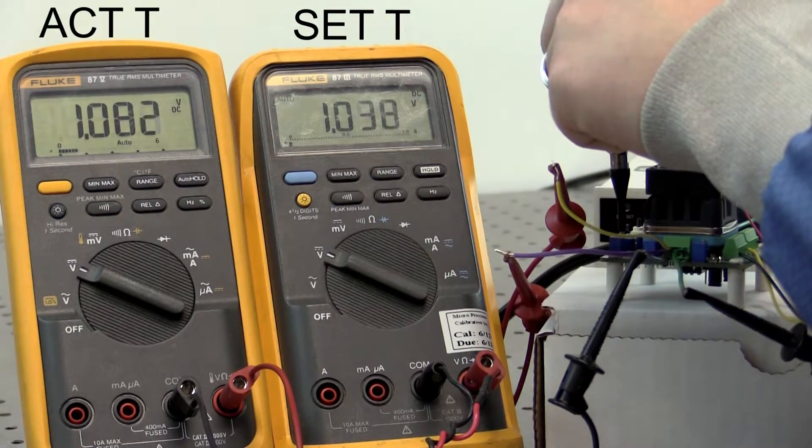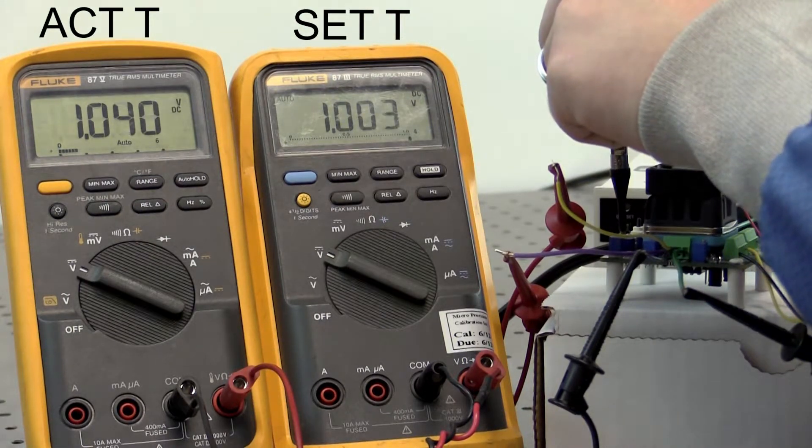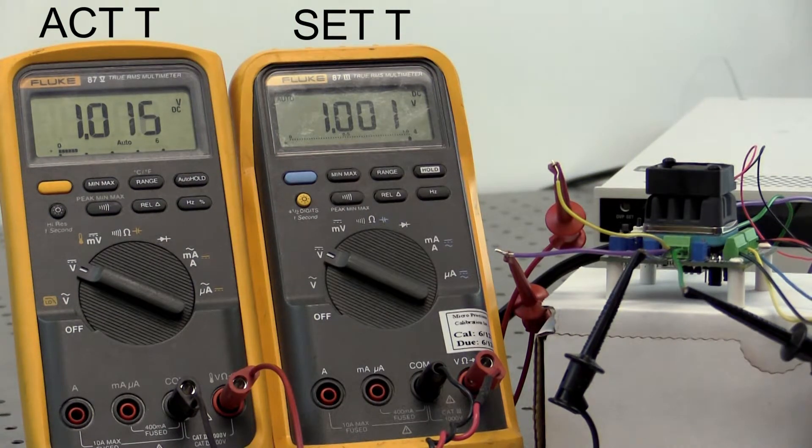To adjust the SET-T, with the voltmeter attached to the SET-T and COM wires, turn the SET-T trim pot screw. Rotate the trim pot clockwise to increase or counterclockwise to decrease the voltage.